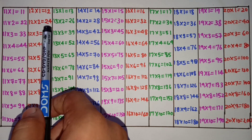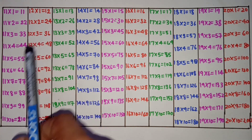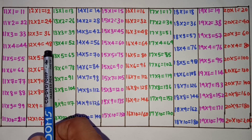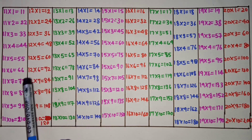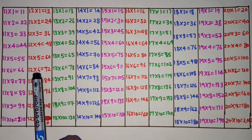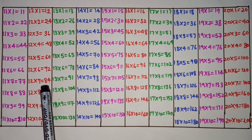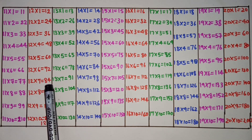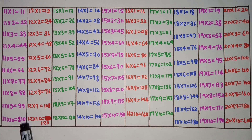12×1 is 12, 12×2 is 24, 12×3 is 36, 12×4 is 48, 12×5 is 60, 12×6 is 72, 12×7 is 84, 12×8 is 96, 12×9 is 108, 12×10 is 120.